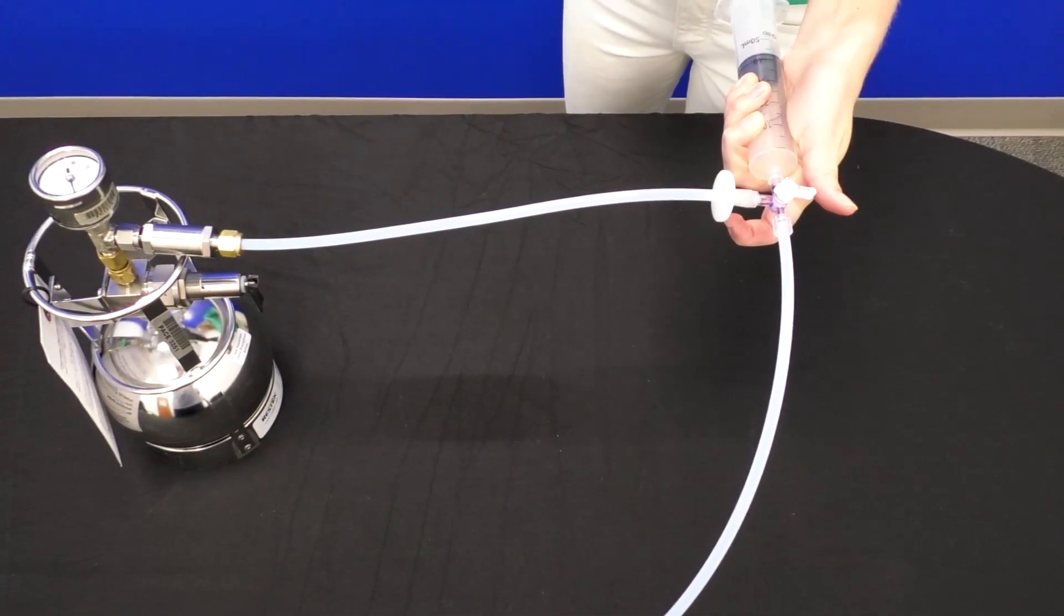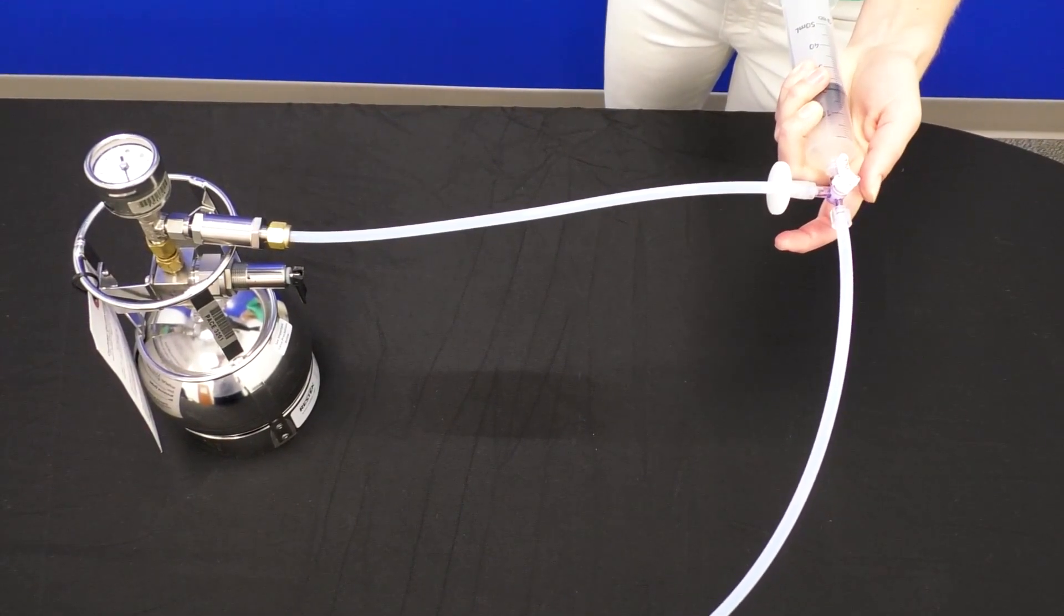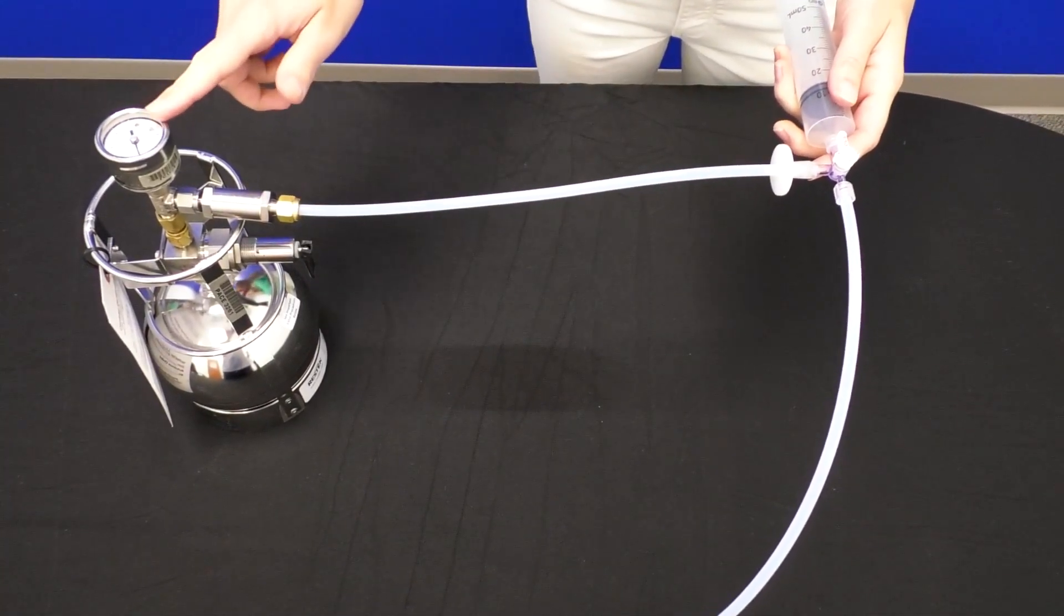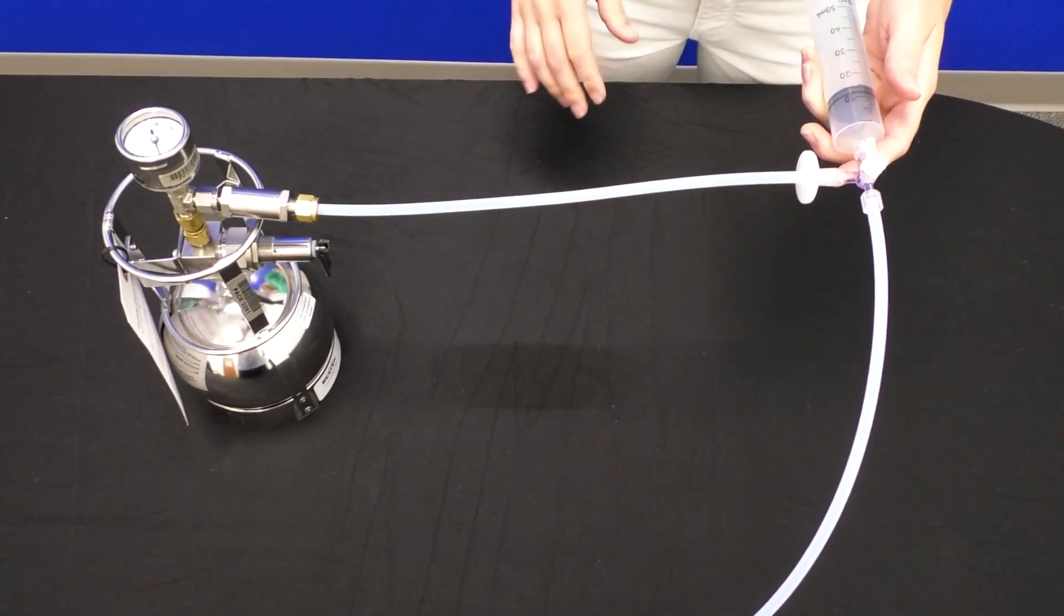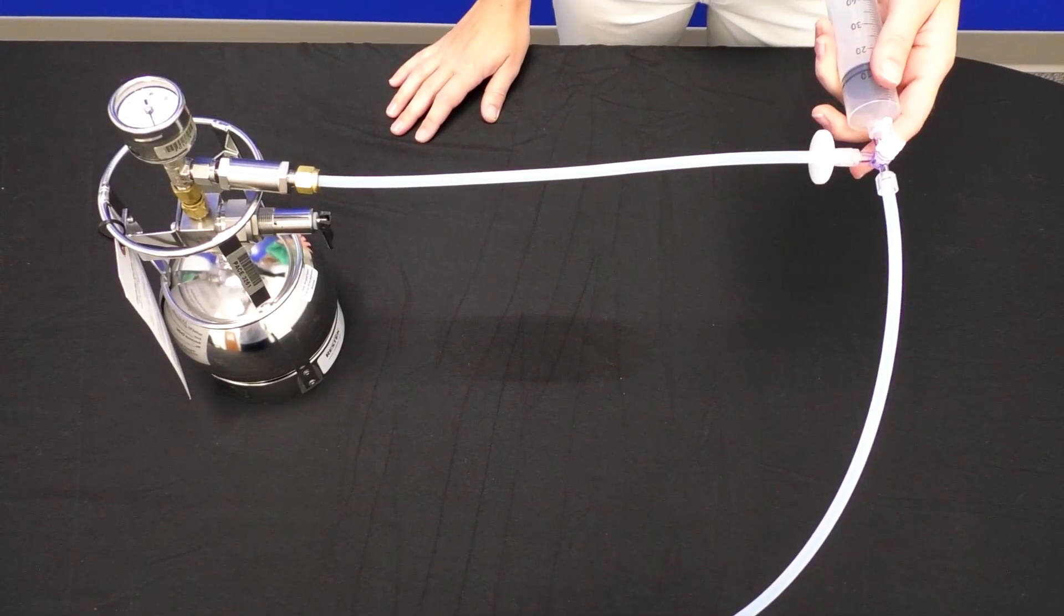You can see that the vacuum is dropping. And then you'll want to close this valve here, so then I can't draw more air back in the system from the syringe. So you can see that the pressure is dropped, so you'll wait to your desired amount of time to confirm that there are no leaks in your sampling train.